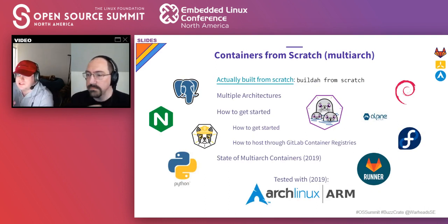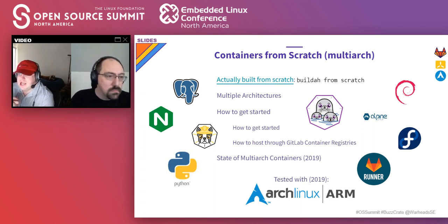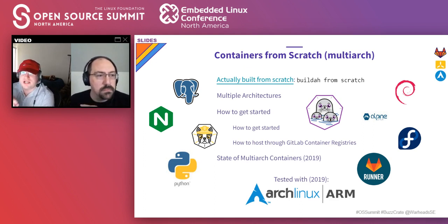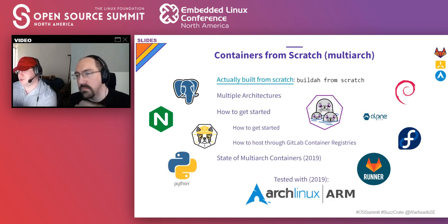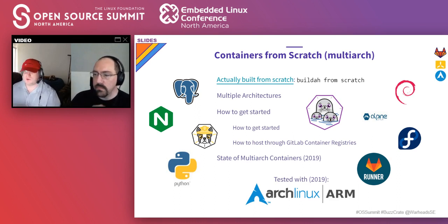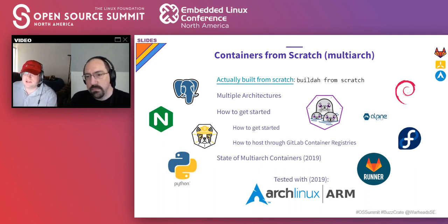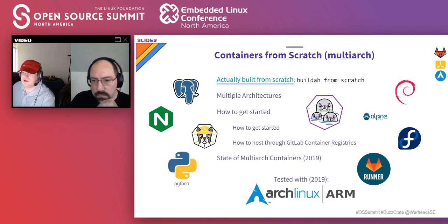There has been some talk about ARM support — for instance, the future MacBooks. As of 2019, all these things we tried worked on ARM without thinking about it: Debian, Alpine, Fedora, GitLab Runner, Python, Buildah, Podman, Nginx, Docker, and Postgres — multi-arch support was there. Everything in our project is built from scratch; we're not using Docker, not using 'FROM alpine' or anything like that. It is always from scratch, building from native containers on both platforms. You can see it in our build pipelines at gitlab.com/buzzcrate.